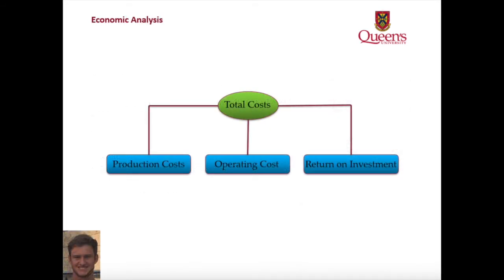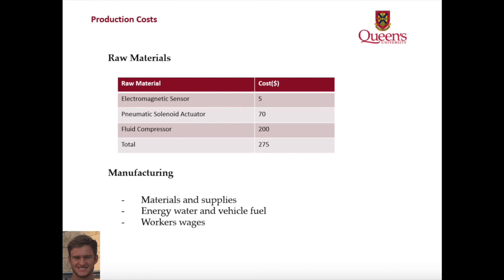Our economic analysis looked at three cost factors. Production costs include those involved in physically producing the design system. Operating costs include ease of replacement, and return on investment looked at energy savings from increased design controllability. Production costs were broken down into raw materials and manufacturing costs. The table presented displays our preliminary estimates for the main components of the proposed solution, which include an electromagnetic sensor, pneumatic solenoid actuator, and a fluid compressor. Since there are no camless engines currently commercially produced, we broke down manufacturing based off three main cost drivers: materials and supplies, energy, water and vehicle fuel, and workers' wages. Our research indicated that materials and supplies is by far the largest contributor, and therefore our raw materials will have the largest contribution to overall production costs.